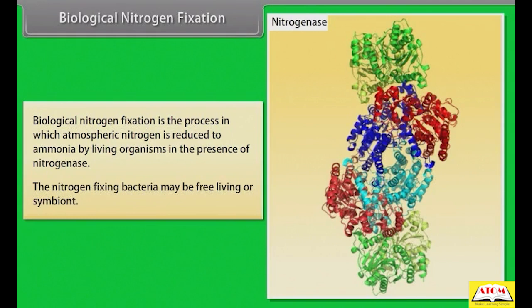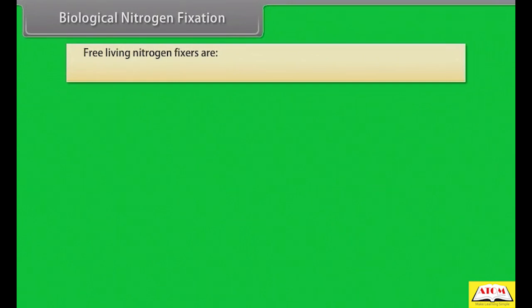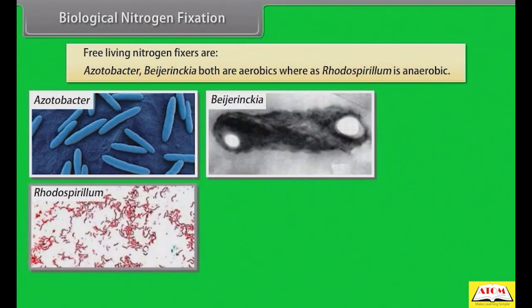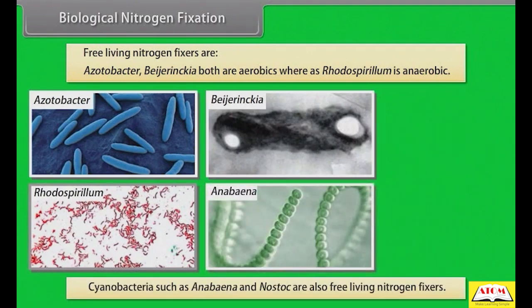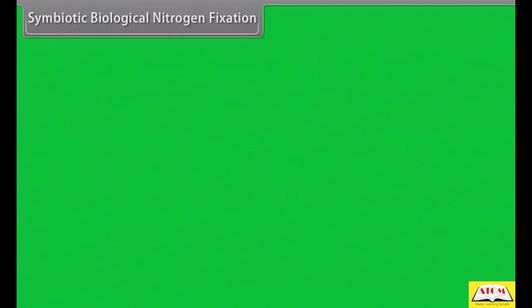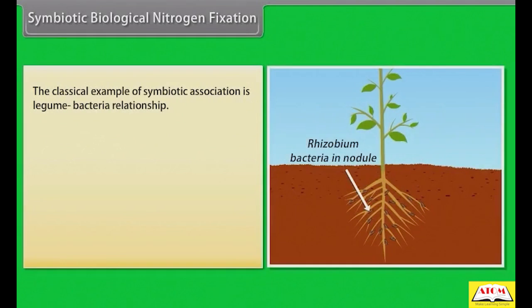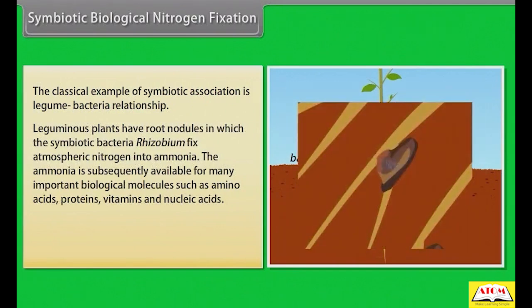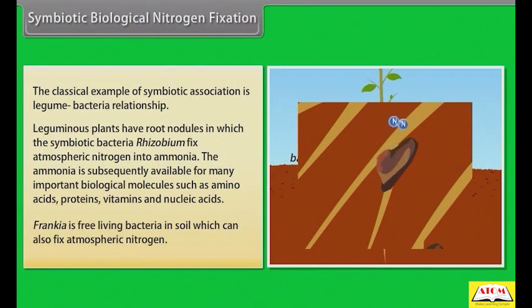The nitrogen-fixing bacteria may be free-living or symbiotic. Free-living nitrogen fixers are Azotobacter and Beijerinckia, both of which are aerobic, whereas Rhodospirillum is anaerobic. Cyanobacteria such as Anabaena and Nostoc are also free-living nitrogen fixers. In symbiotic biological nitrogen fixation, the classical example is the legume-bacteria relationship. Leguminous plants have root nodules in which the symbiotic bacteria Rhizobium fix atmospheric nitrogen into ammonia, subsequently available for amino acids, proteins, vitamins and nucleic acids. Frankia is a free-living bacteria in soil which can also fix atmospheric nitrogen.